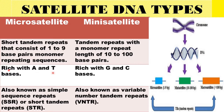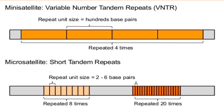Microsatellites are rich in adenine and thymine base pairs, whereas minisatellites are rich in guanine and cytosine. Microsatellites are also known as simple sequence repeats (SSR) or short tandem repeats (STR), and are used as simple sequence markers. Minisatellites are known as variable number tandem repeats (VNTR).